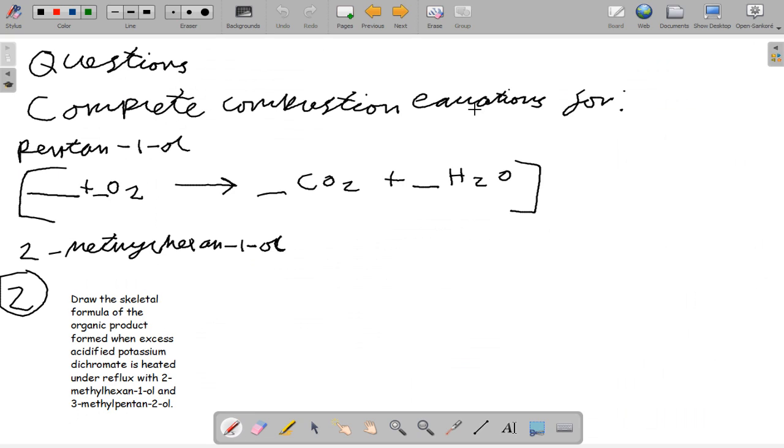We're going to do some complete combustion equations for pentan-1-ol and 2b for hexan-1-ol. A quick hint is you need your compound to start off with, plus the number of oxygens to make CO2 and H2O. First step is to count your carbons and hydrogen atoms present, then count the oxygen molecules on the right hand side later. Then you can deduce the number of oxygen molecules required once you have calculated the number of oxygen atoms present on the right hand side.